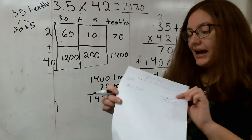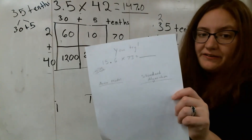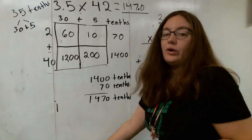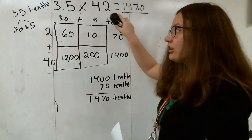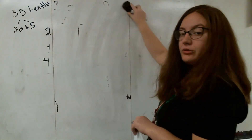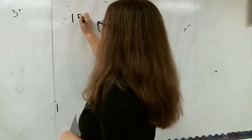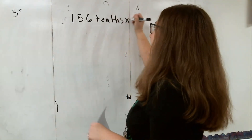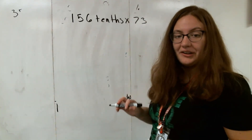Go ahead and try the problem on the back now. You're going to be multiplying 15 and 6 tenths times 73. I wrote a little bubble that says 'think 156 tenths.' When you think 156 tenths, think about what 156 looks like in standard form. This one's a little bit trickier because it involves three-digit multiplication, but I know you guys can do it. Think about what 156 tenths looks like in expanded form, then multiply that by 73. If you have any questions, please let me know. Good job today.